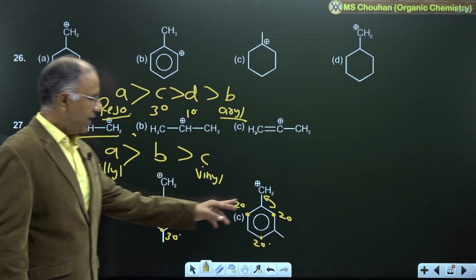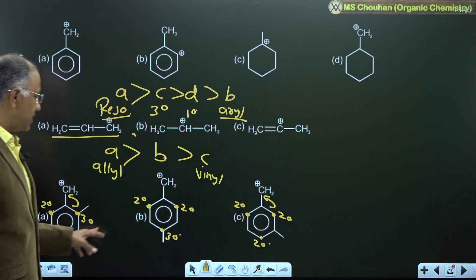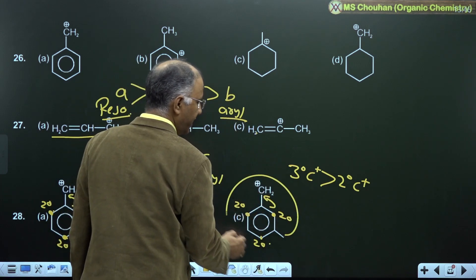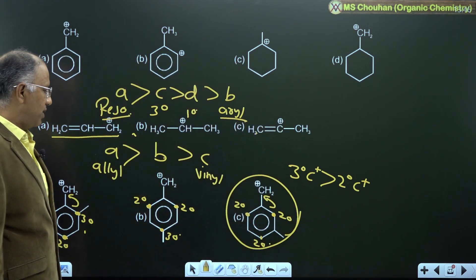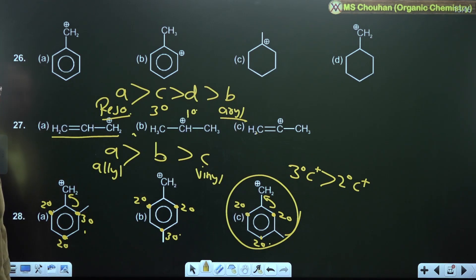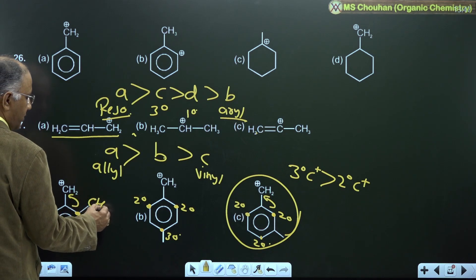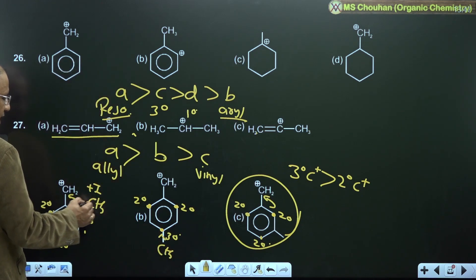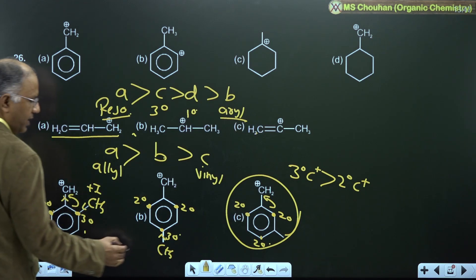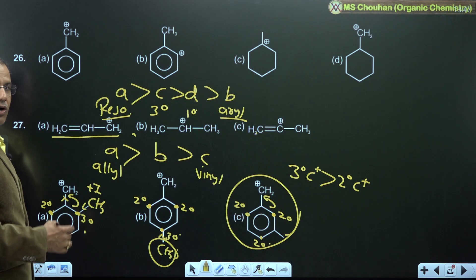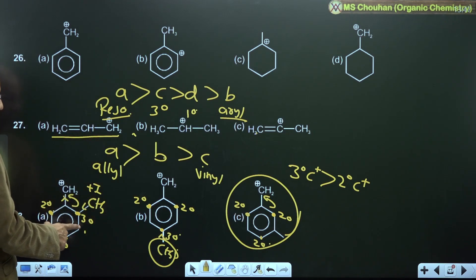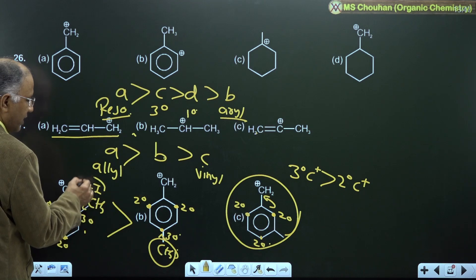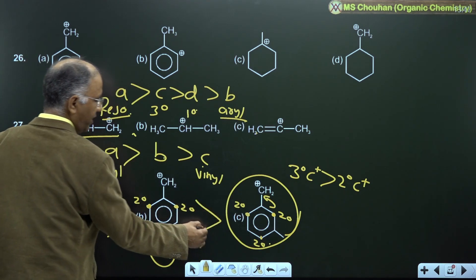Since 3° carbocation is more stable than 2°, C is least stable because it forms only 2° cations. To compare A and B: both have 3° cations, but in A the methyl group is at the ortho position (nearer to the cation), while in B it is at the para position (farther from the cation). Since inductive effect depends on distance and +I is directly proportional to cation stability, A is more stable than B. So stability order is A greater than B greater than C.